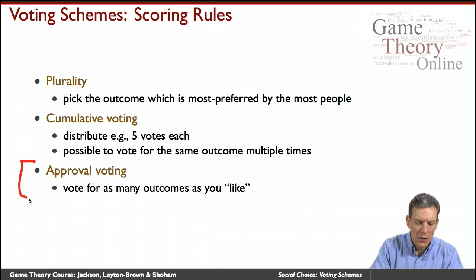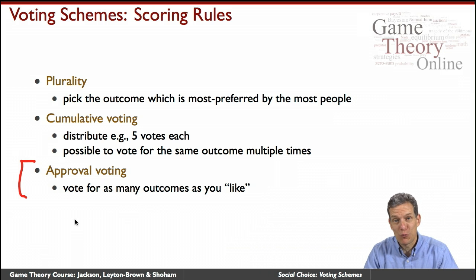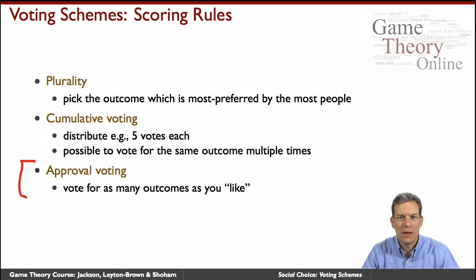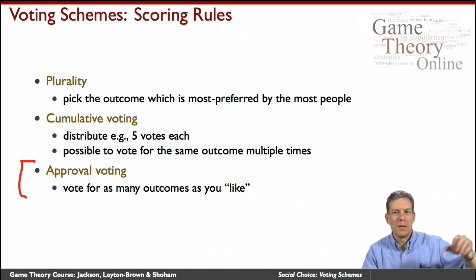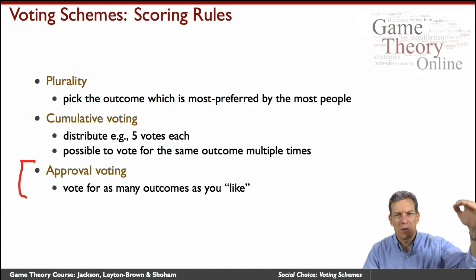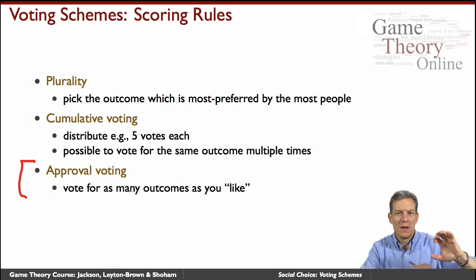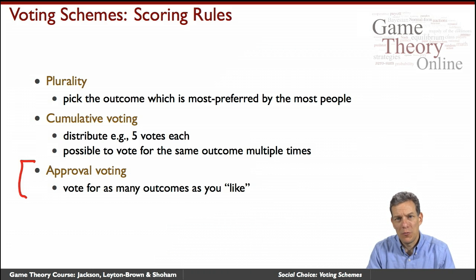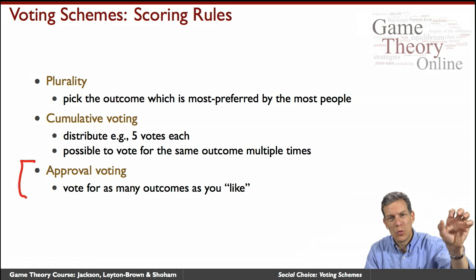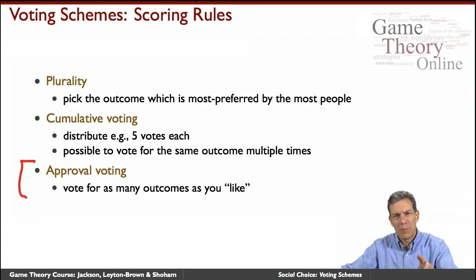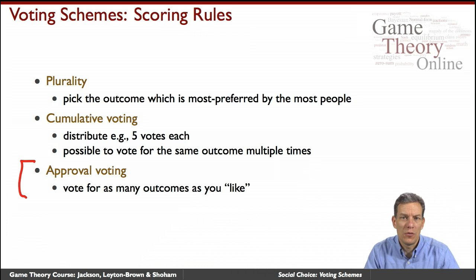Approval voting is another rule where you can express whichever outcomes you like and not express the ones you don't like. This is often used for electing new members to a club or a Hall of Fame — you list which candidates you think should be included and give zeros to the ones you don't. Then there's a method of counting up and either picking one candidate or picking several if there's some threshold.